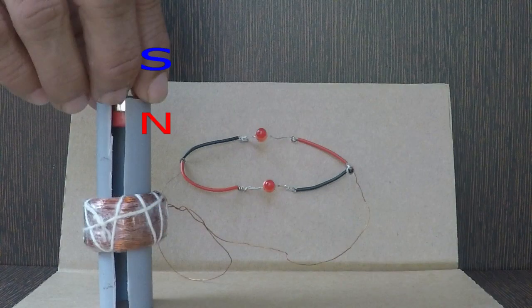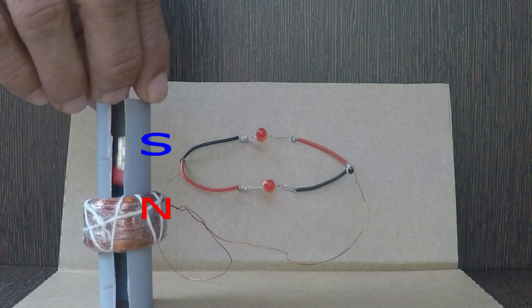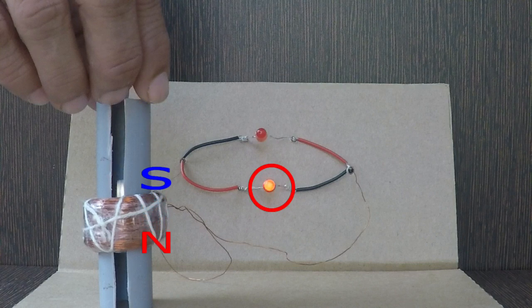If I flip the magnets around, we can see the change in sequence with which LEDs glow. Now lower LED glows first followed by upper LED.